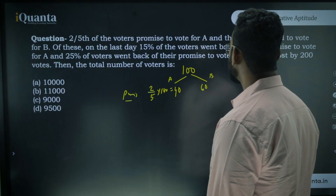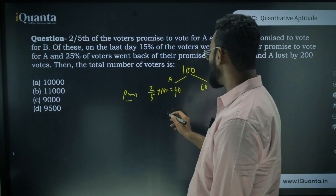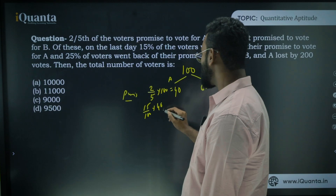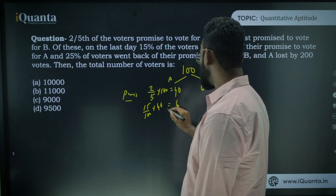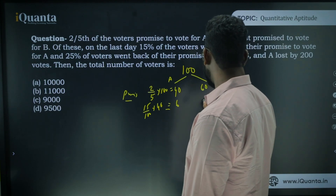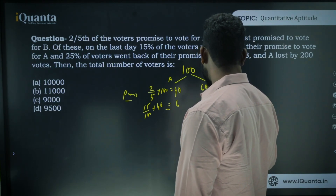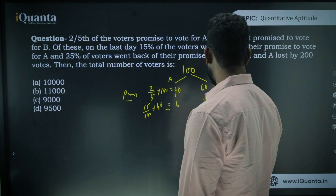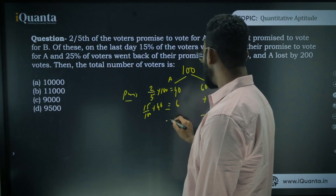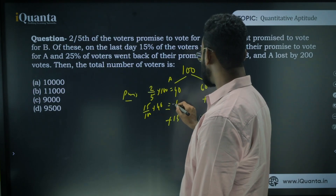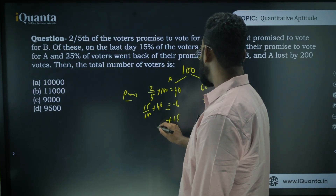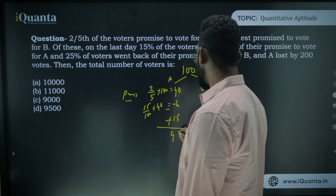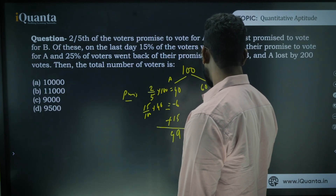With 100 total voters, two-fifths promised for A = 40, and 60 promised for B. On the last day, 15% of 40 = 6 voters switched away from A to B. And 25% of 60 = 15 voters switched away from B to A. So A gets 40 − 6 + 15 = 49 votes, and B gets 51 votes.